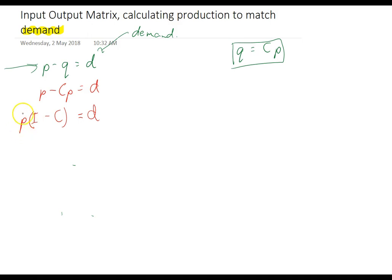So, finally, I can get this P by itself, this production by itself by moving I minus C, which is a matrix to this side. But when I move I minus C to this side, it's got to be the inverse of that. Alright, so we've done a little bit of work there but it's all to create this.